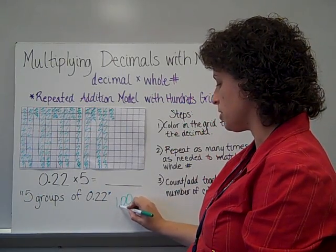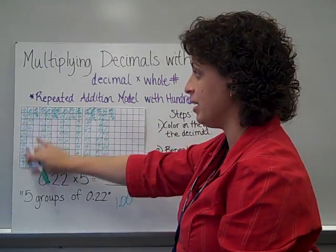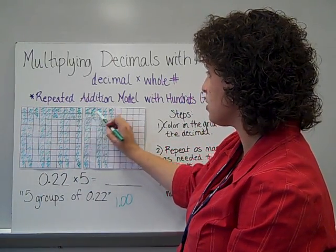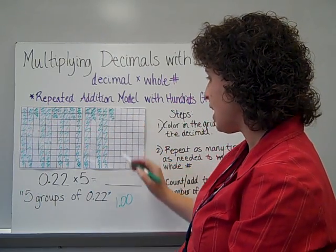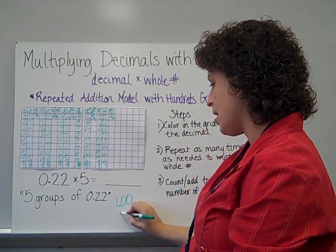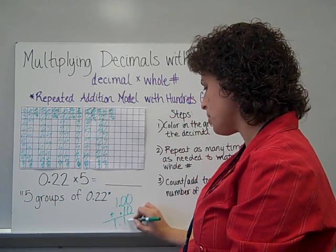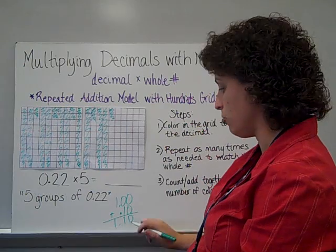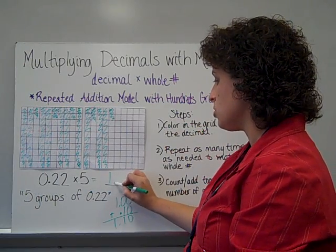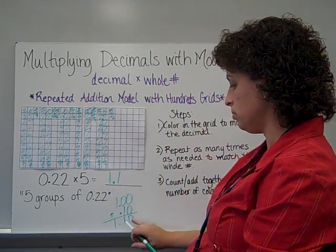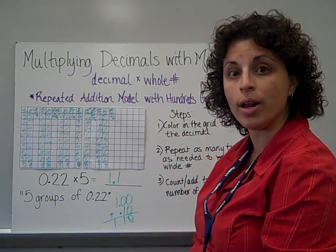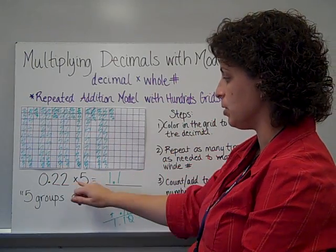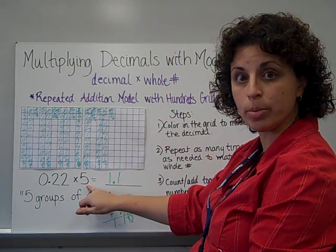I counted all of my 10 columns. And then I've got 2, 4, 6, 8, 10 more pieces, and that's 10 hundredths. So when I put that together, I have 1 and 10 hundredths, but I don't have to have that decimal at the end. So my answer is 1 and 1 tenth. And I found that by coloring in the decimal, however many times it was being multiplied by.